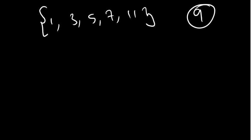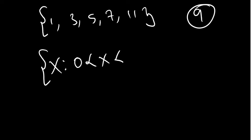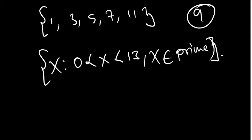To write a set of prime numbers in set builder notation: x such that 0 < x < 13, and x is a member of the prime numbers. When you want to list the elements, you know these are prime numbers, so you won't confuse them with odd numbers.